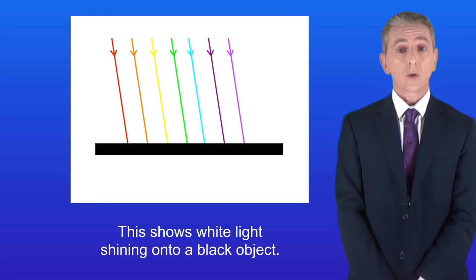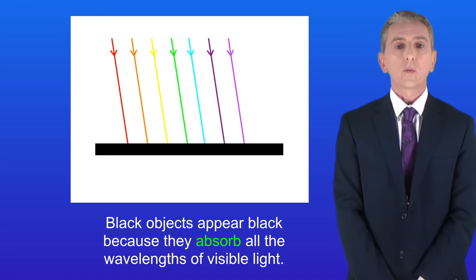This shows white light shining onto a black object. Black objects appear black because they absorb all the wavelengths of visible light.